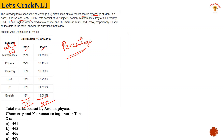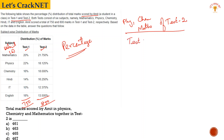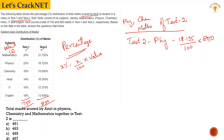First question: Total marks scored by Ahmed in physics, chemistry, and math — these three subjects — in test 2. The formula for finding marks is: x percentage divided by 100, multiplied by the total value. So, 18.125 divided by 100, into 850. That gives us the percentage value for each subject.